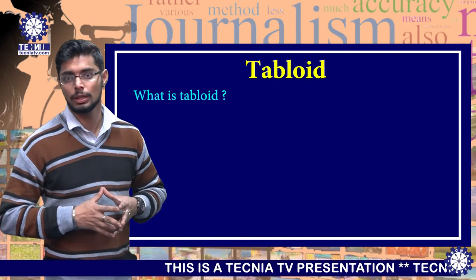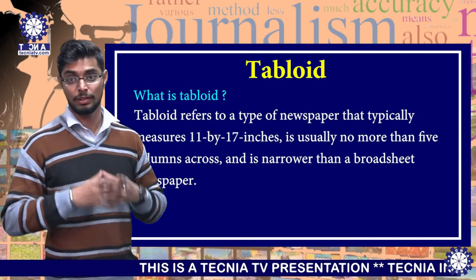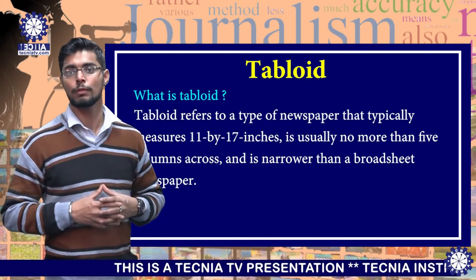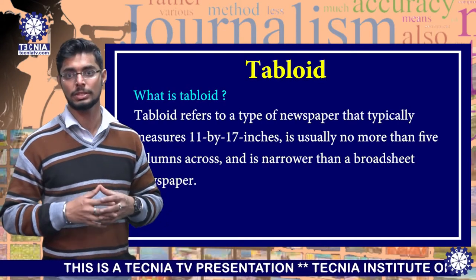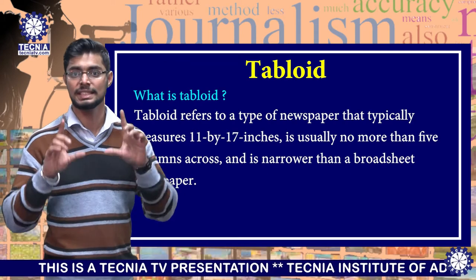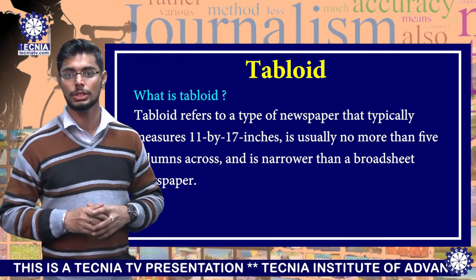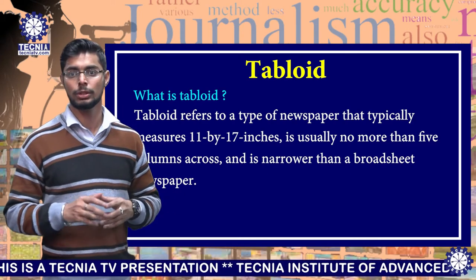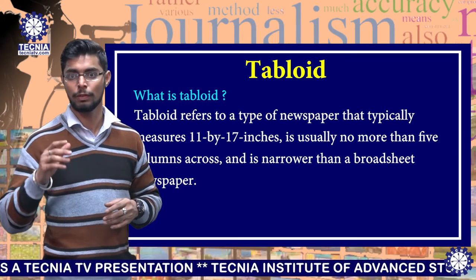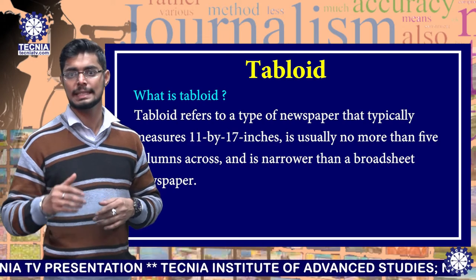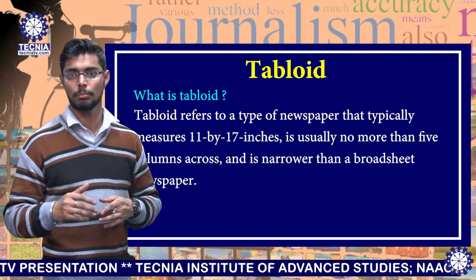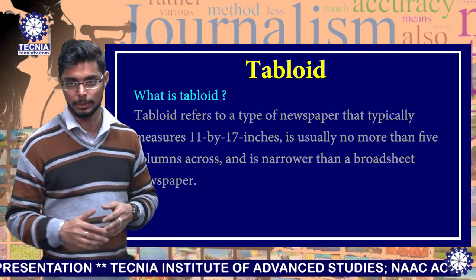What is tabloid? Tabloid refers to a type of newspaper that typically measures 11 by 17 inches, is usually not more than 5 columns across, and is narrower than a broadsheet newspaper.